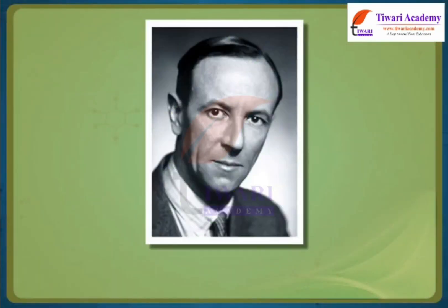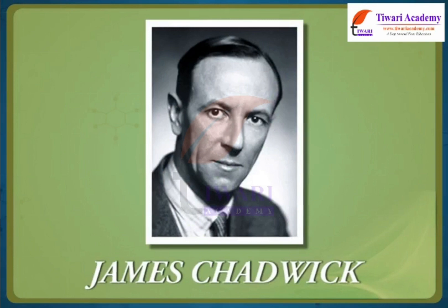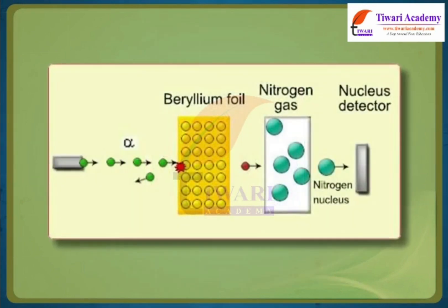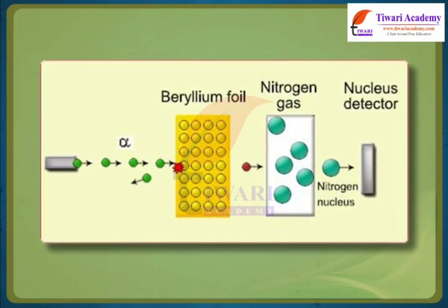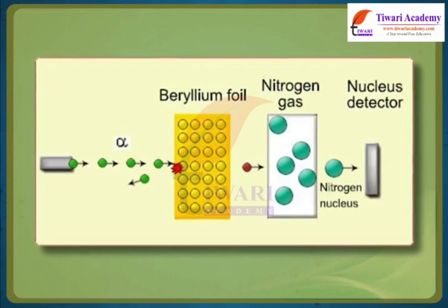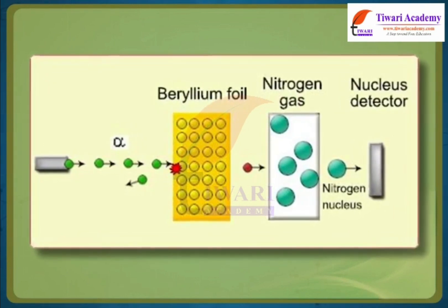The neutron was discovered by Chadwick. He made alpha particles strike on beryllium and neutral particles are emitted and these were called neutrons.